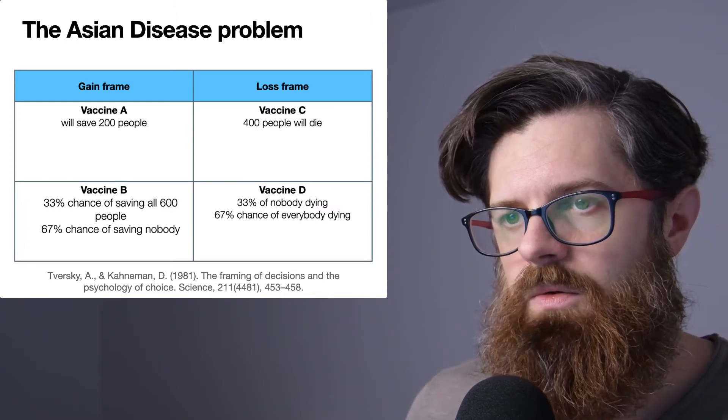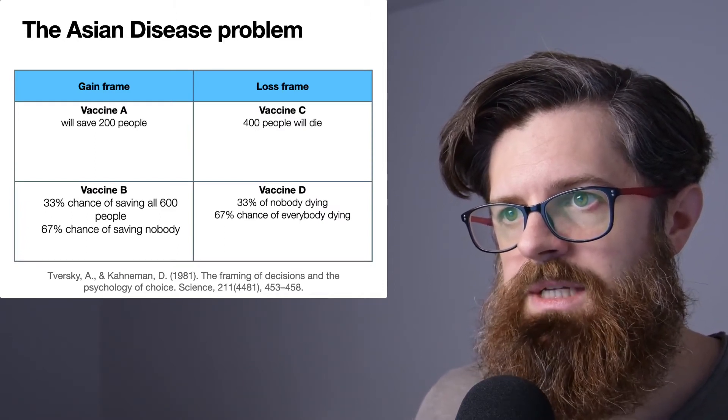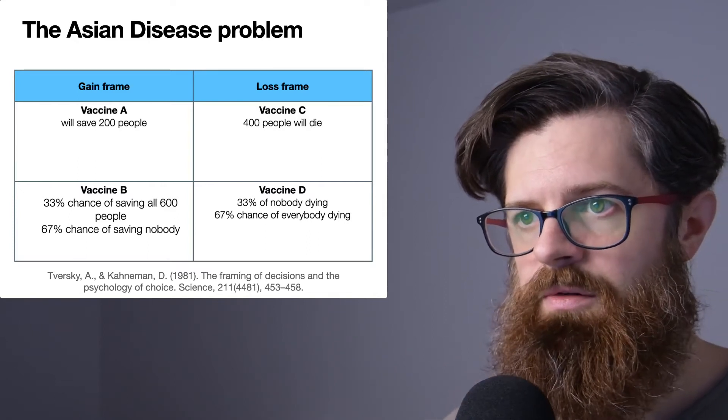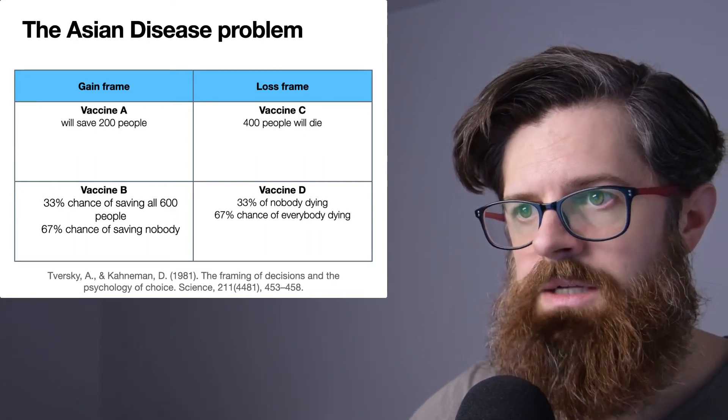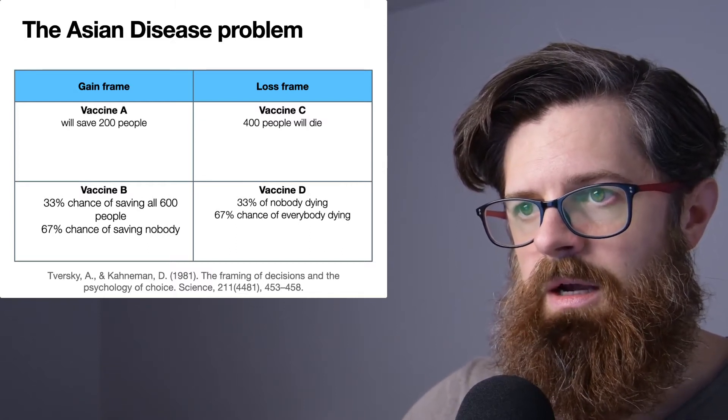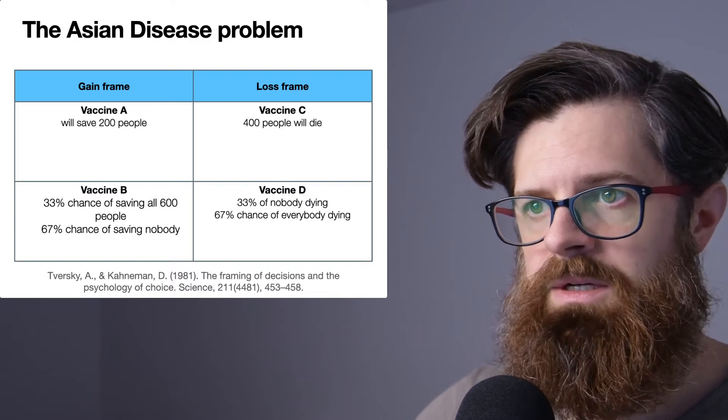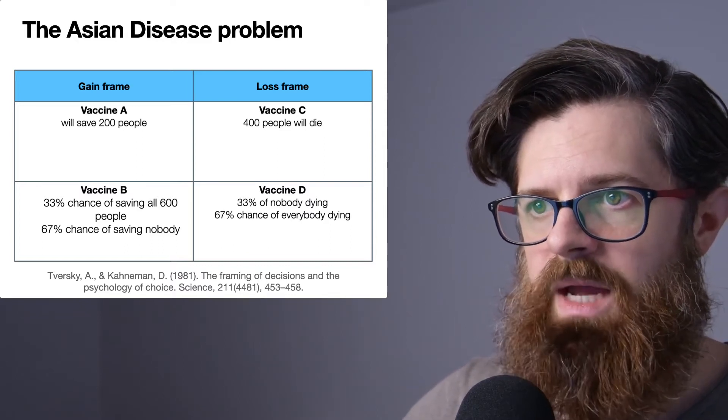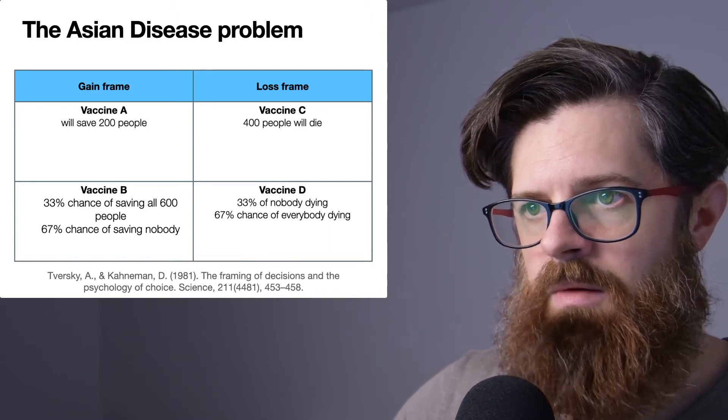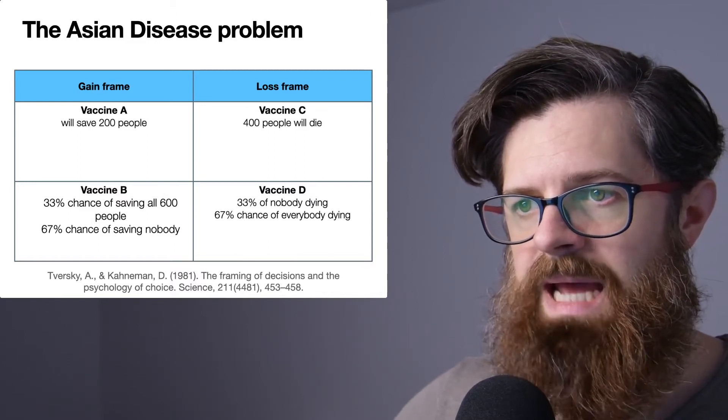The interesting thing about the Asian Disease Problem is it tells you very much about the framing of events. What I've done here in this table is basically to put in the information that we were given about Vaccines A, B, C, and D. In the first example, when we were considering Vaccines A and B, this was what's called the gain frame.